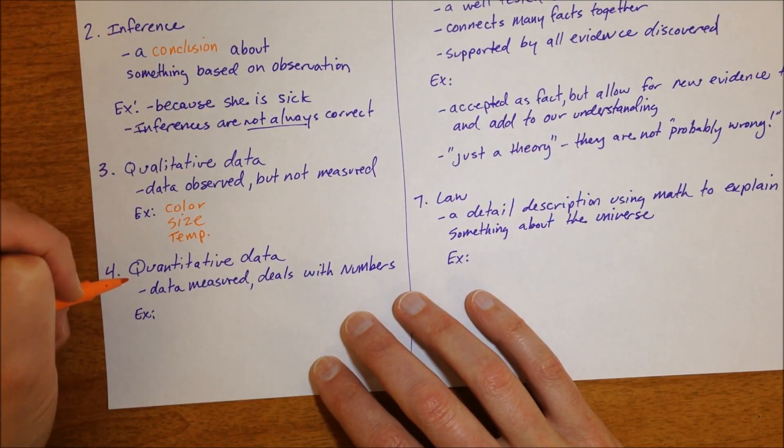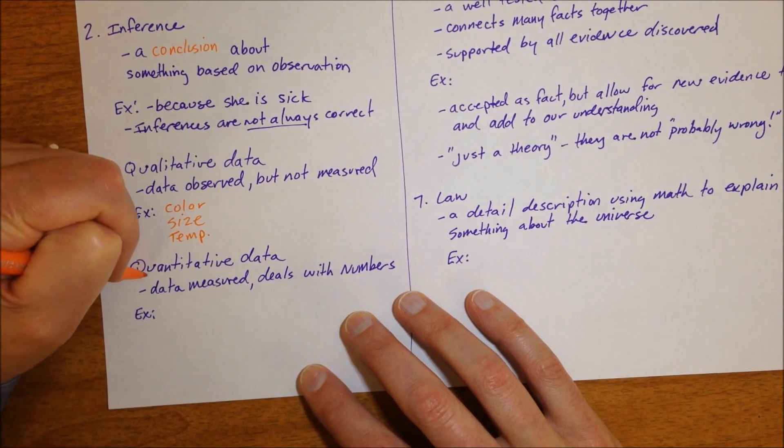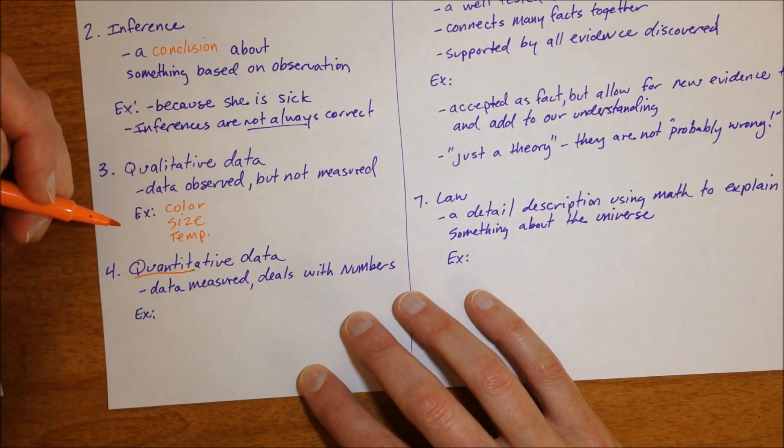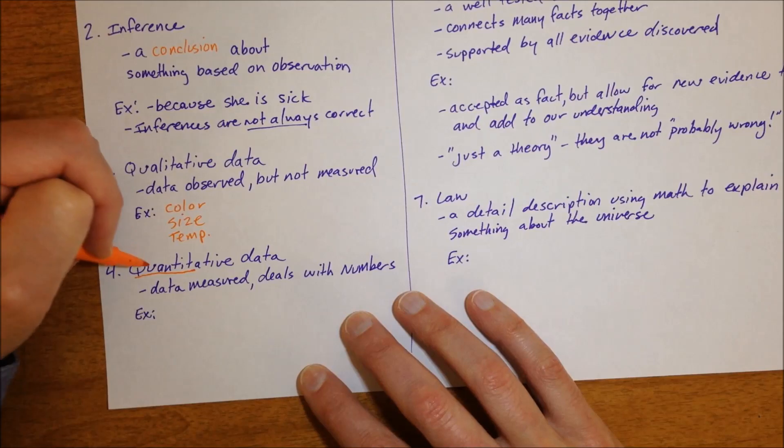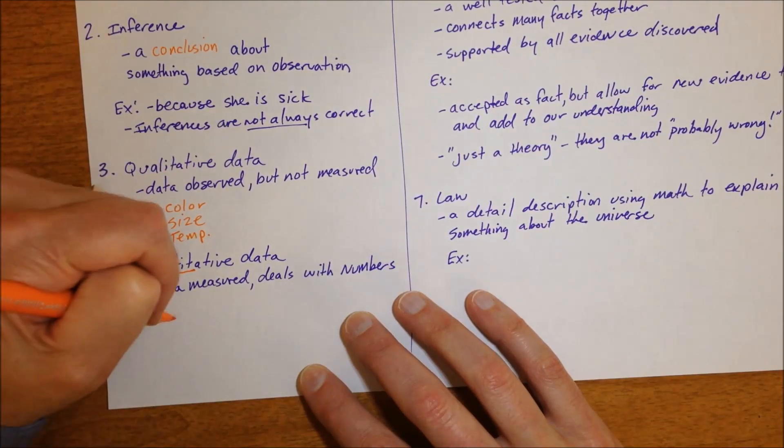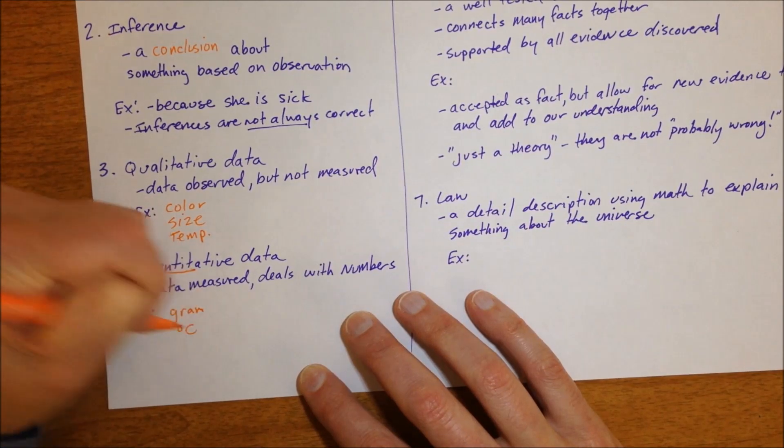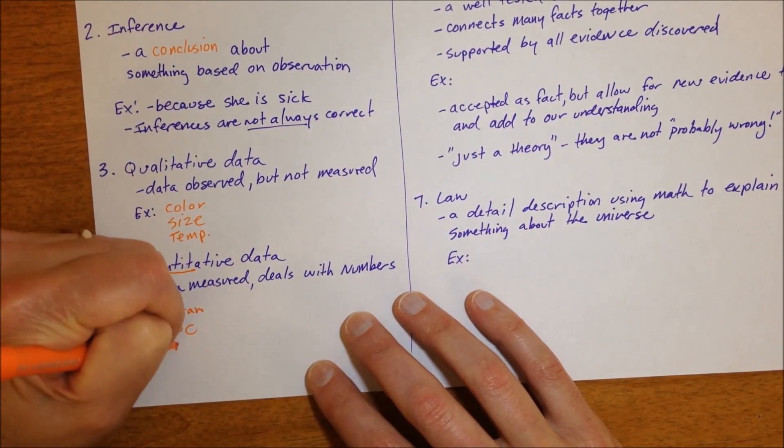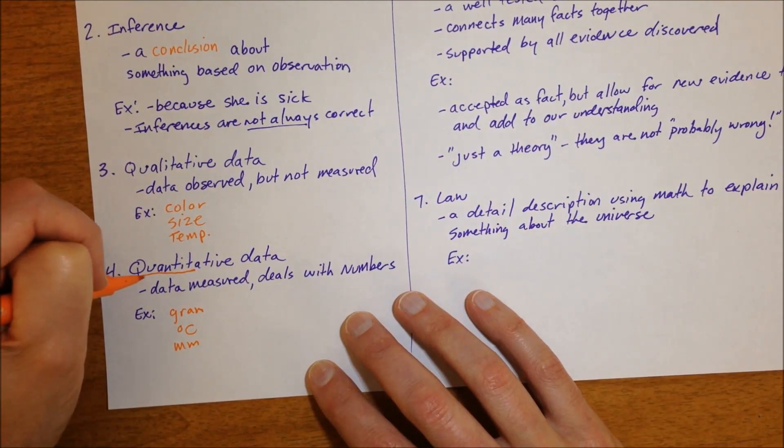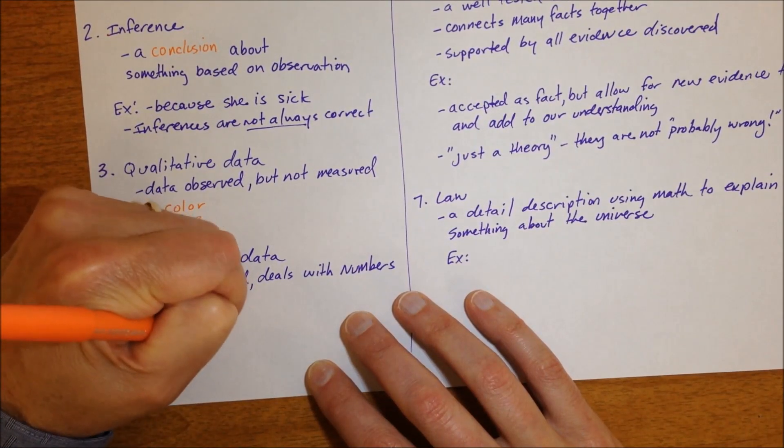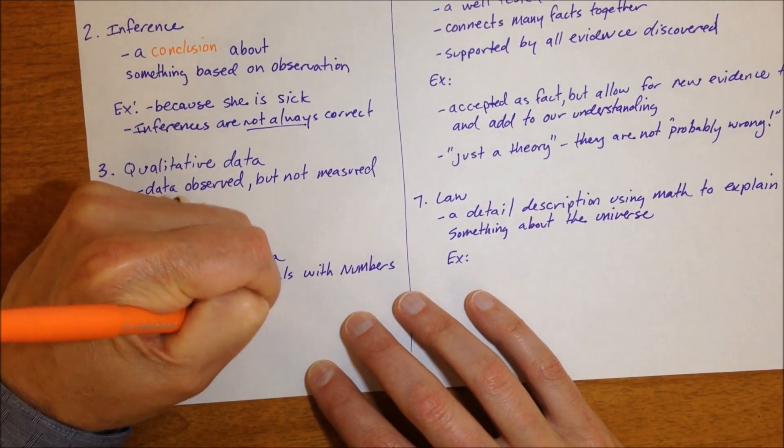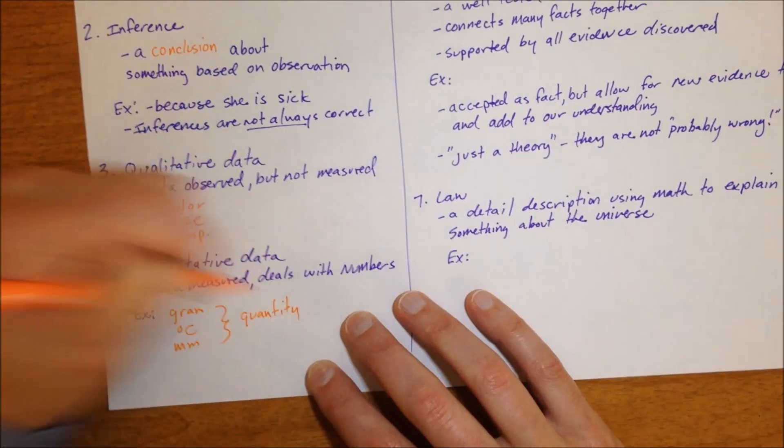Whereas on the other hand, quantitative data, and it actually has basically the word quantity in it, which means numbers. It's data that you measure. So if you measure the amount of grams or something, the temperature of something in degrees Celsius, how many millimeters something is, that's quantitative because these measurements are in a quantity.